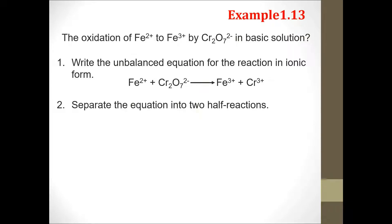The second step is to separate the equation into two half reactions. We can see that the ferrum increases the oxidation number. Therefore, it is oxidation from 2+ to 3+. And the reduction would be from dichromate ion to become chromium ion, 3+.